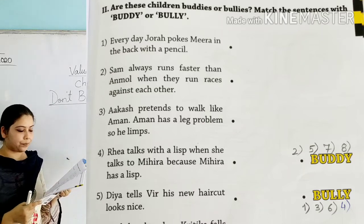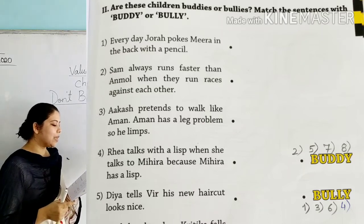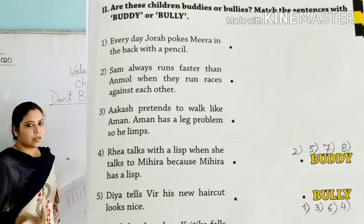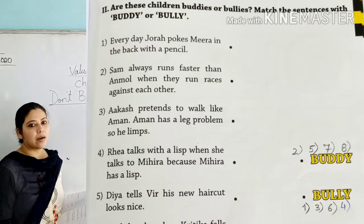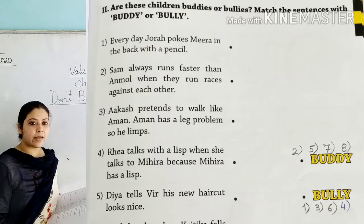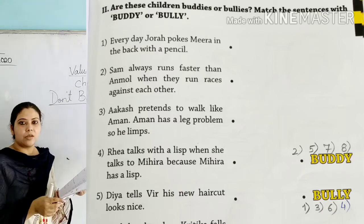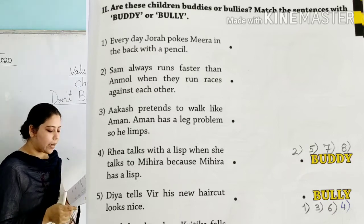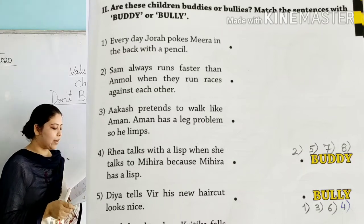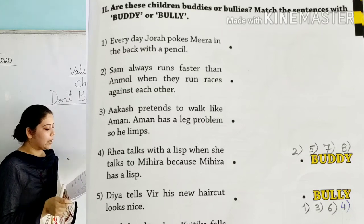'Sam always runs faster than his friend when they run races against each other' — this is absolutely fine. When you are running a race, you try to compete with each other and try to win. This is not a bully — this is a buddy. Friends can compete with each other, can't they?